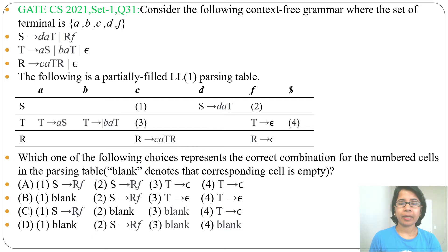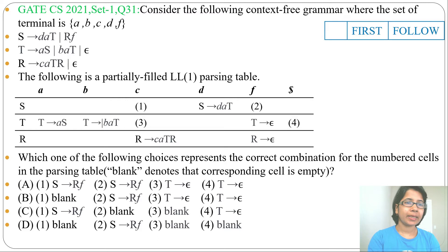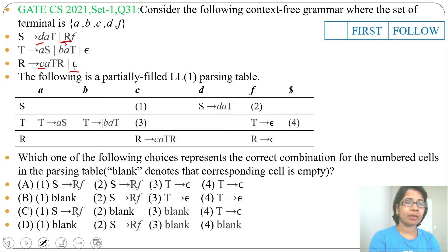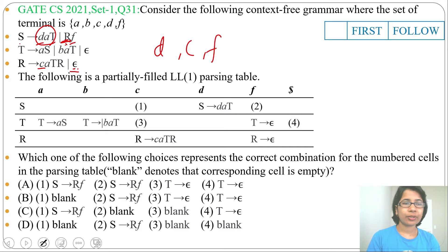For construction of the LL(1) parsing table, first you need to find FIRST and FOLLOW of every variable. FIRST of S will be d. FIRST of R will be c and epsilon — whenever R derives epsilon, FIRST of S through that production will be f. So FIRST of S will be {d, c, f}.